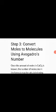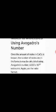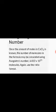The third step is to convert moles to molecules using Avogadro's number. As you know, one mole of any substance contains 6.022 × 10²³ molecules. If we are counting atoms instead of molecules, then it would be the number of atoms. We obtained 0.5454 moles of calcium chloride in the previous step.